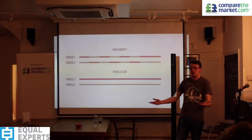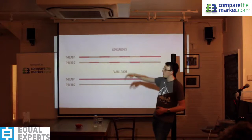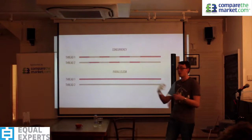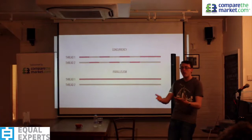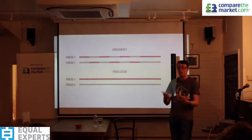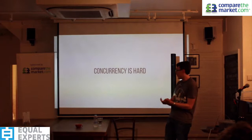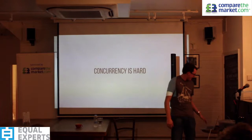Parallelism takes up a whole thread for a single job regardless of what you're doing. Concurrency, however, says: I can do part of this job on one thread and part of that job on another, switching them around and scheduling them most effectively. We can get to a stage where applications run more effectively because they're using all available threads, even if they're more complex.